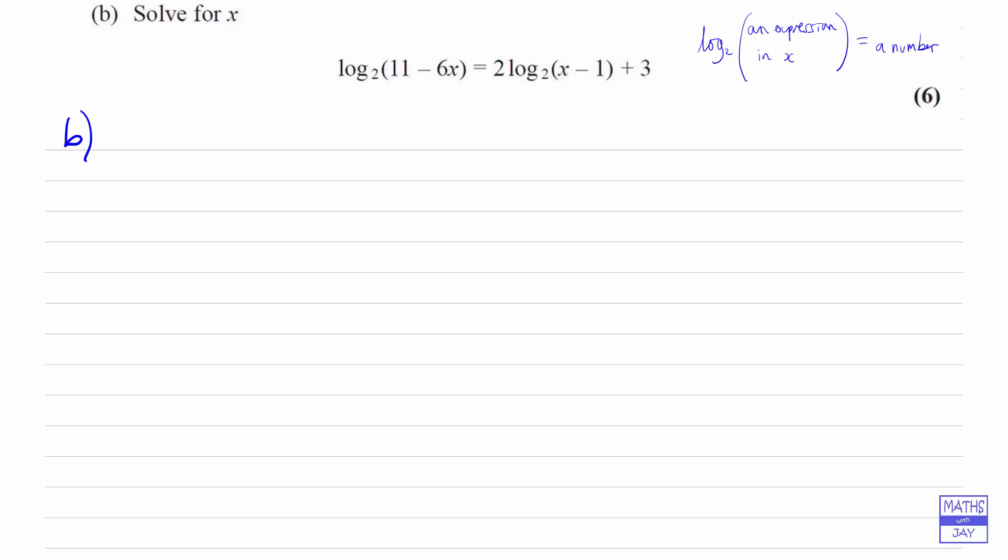So we're aiming to get both logs on the left-hand side and we want log of something or other. So the log to base 2 of 11 minus 6x is already there. Now the other one is on the right-hand side, so let's take that away from both sides. And also we want to have the whole expression being log of something. So that power, that 2 in front of the log, can be written as a power. So that's one of our laws of logs. So we're taking away log to base 2 of x minus 1 squared. So the 2 in front of the log has become a power. So that's our left-hand side and then our right-hand side has got the 3 on it.